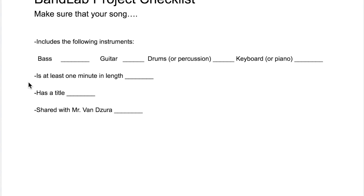The second guideline is that you need to make sure that your song is at least one minute in length. When you play your project, you'll see a time running as you listen to it. Just make sure that that time hits one minute by the end. That should also roughly be about 40 measures or so within BandLab, but you could just check the time by hitting play. It shouldn't take you that long to get a minute's worth of music.